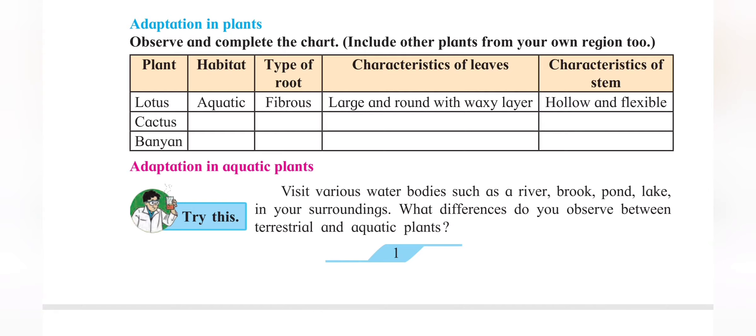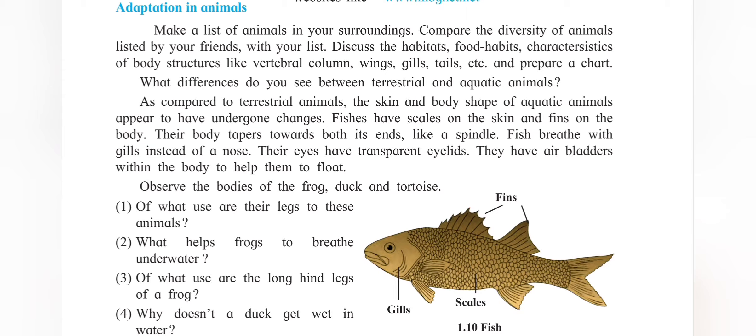Later on, in today's class, we have studied adaptation in animals. Animals are basically of two types: terrestrial and aquatic. Terrestrial animals are the animals which live on land and aquatic animals are animals which live in water. What about aerial animals? Animals which are able to fly like birds are the aerial animals.